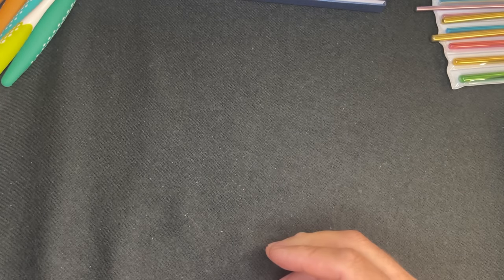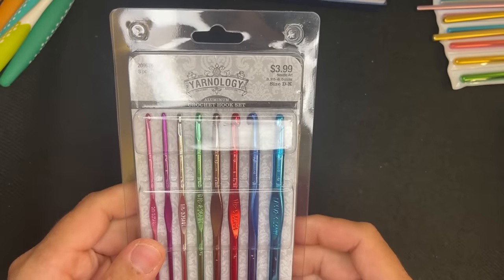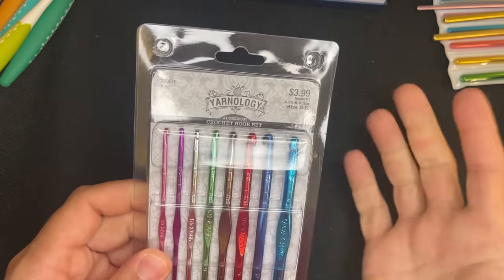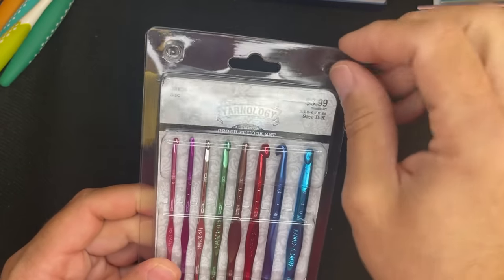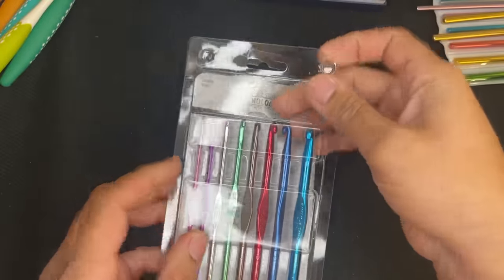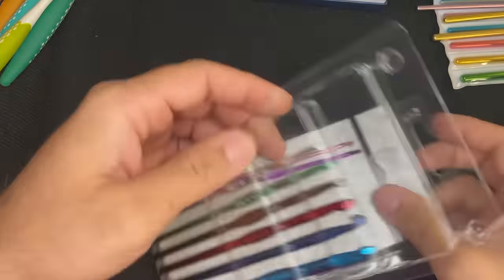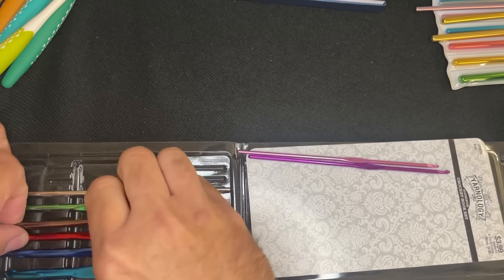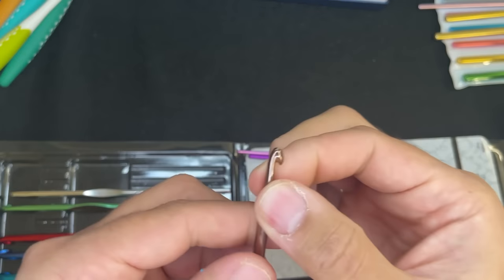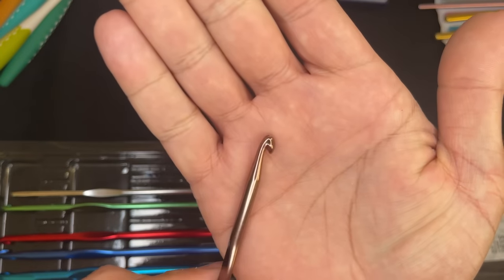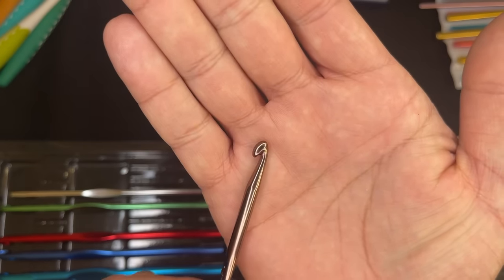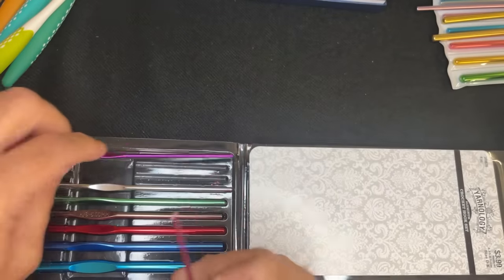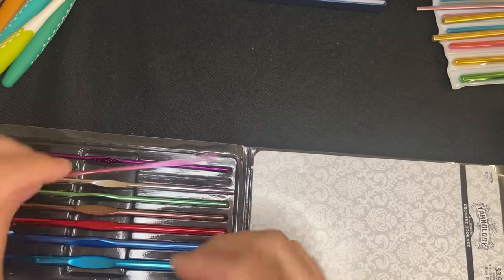So middle of the pack, Yarnology from Hobby Lobby $3.99 for this whole set. It's a great deal for the buy. The reason why it's the middle of the pack is because it's not quite as good as my other ones, but it's not quite as bad as these recent Boye hooks. And what I will tell you is there's beveling on the sides. It's ever so slight, but it's there and it's not a bad hook to work with.